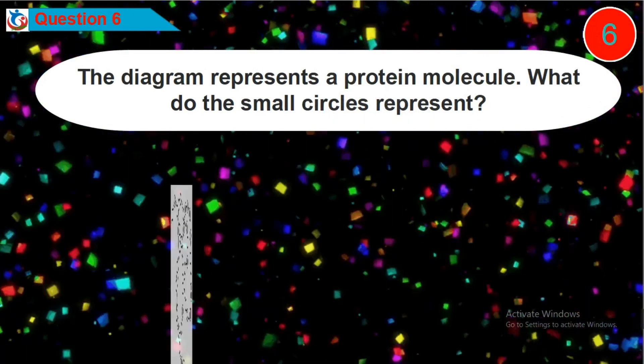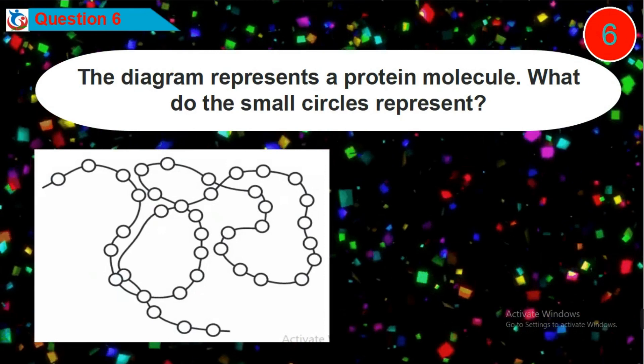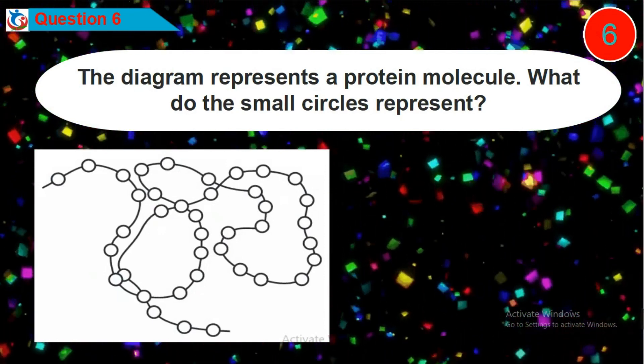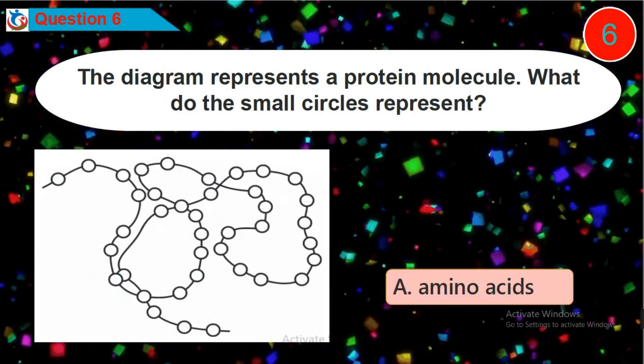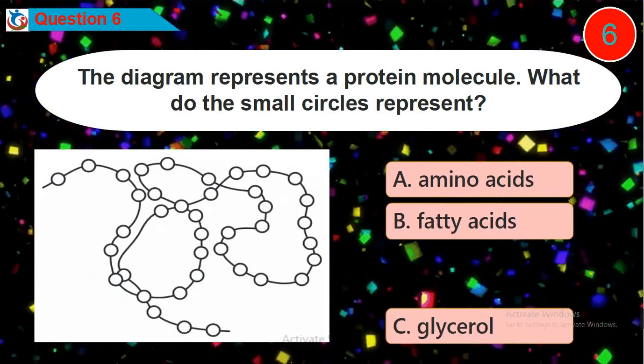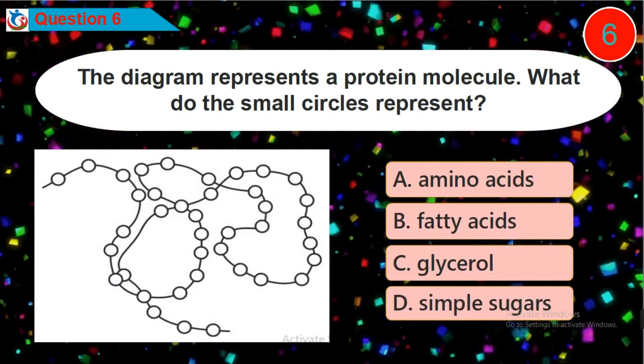Question 6. The diagram represents a protein molecule. What do the small circles represent? Is it option A, B, C or D?